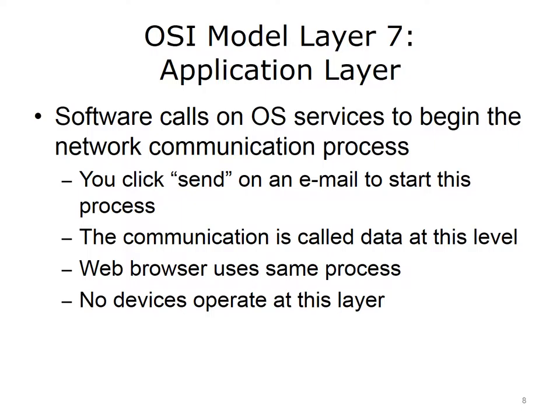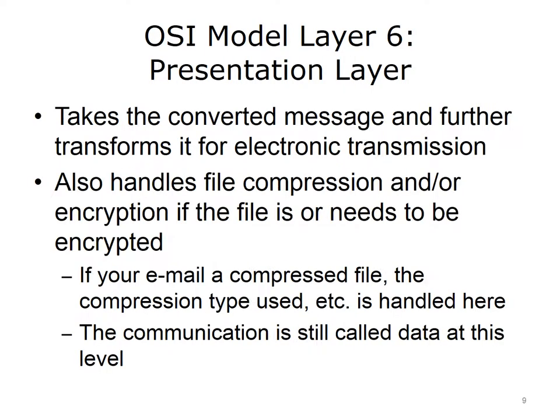OSI model layer 6 is the presentation layer. No devices operate at layer 6 because this is where software works on behalf of hardware, just like layer 7. At layer 6, the converted message received from layer 7 is further transformed for electronic transmission. Layer 6 also handles file compression and encryption when needed. If a user emails a compressed file, the compression type — for example, zip — is handled here. Note that the communication is still called data at this level.